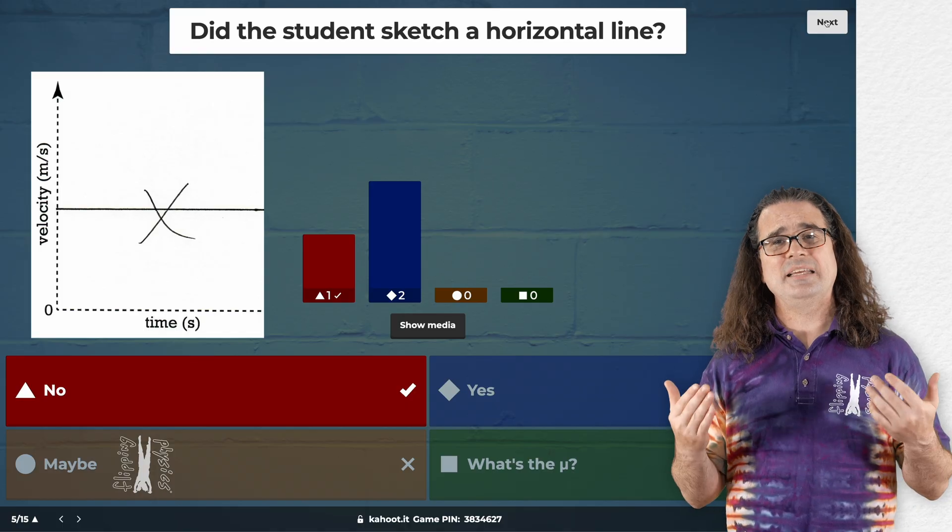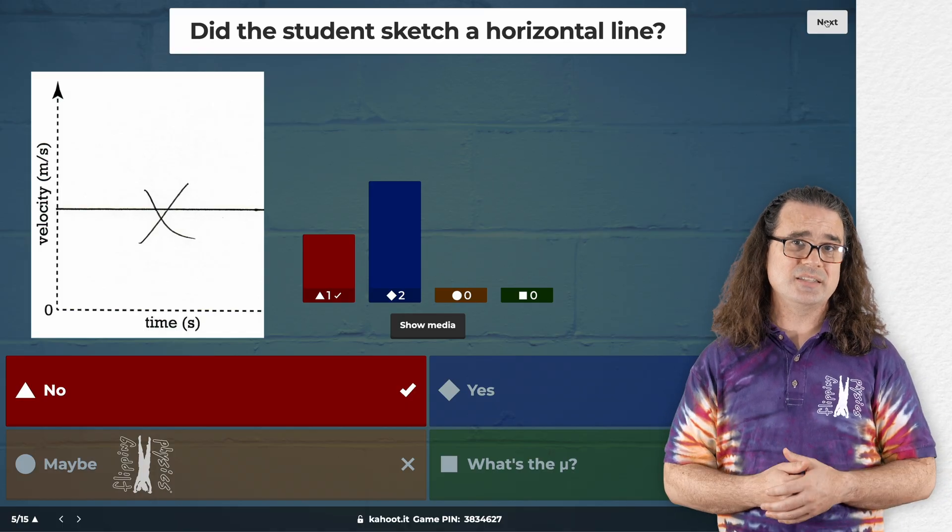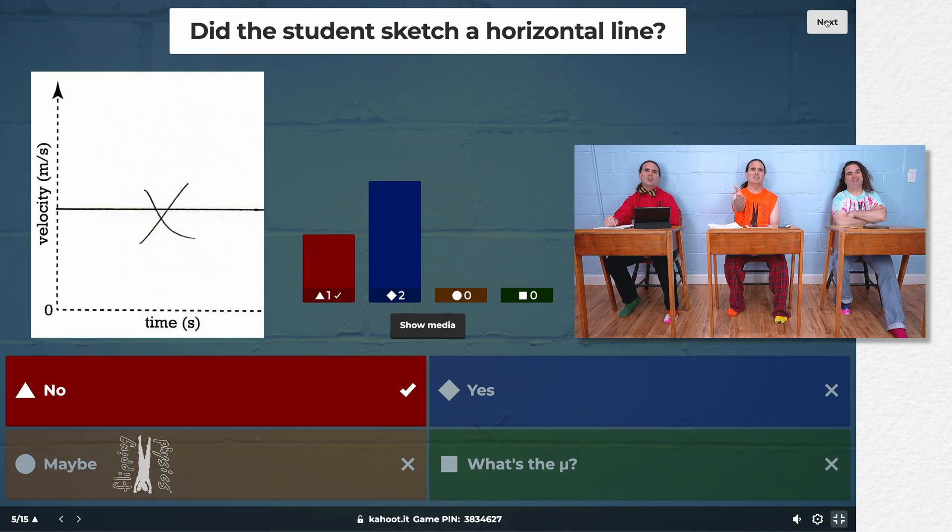Yes, everybody got it correct. The point here is that if you are terrible at sketching, you can identify what you tried to sketch by adding words like horizontal to indicate you were trying to draw a horizontal line.